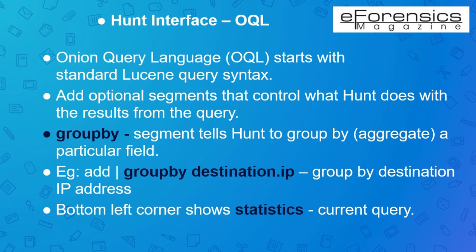Onion Query Language (OQL) is responsible for querying security events in Security Onion. It begins with a standard Lucene query syntax which provides the ability to create your own queries through APIs. The GroupBy segment is an important segment of OQL which tells Hunt to aggregate based on a particular field. For example, if you want to group by a field called Destination IP Address, you can simply insert GroupBy destination.ip to your search option. Multiple aggregations are possible — more fields can be added by separating them with spaces. To group by source IP address and then source port, you could use GroupBy source.ip source.port. The left bottom corner of the Hunt interface page displays statistics about the current query.